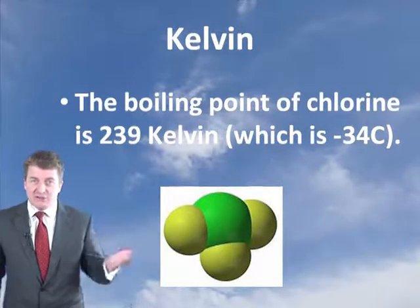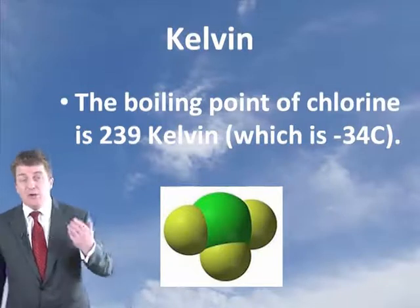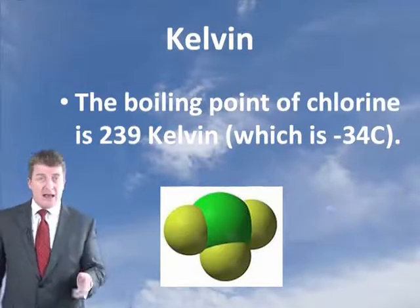As you heat something up it changes form — it depends on whether it has a high or low melting point. If you heated all three substances to zero degrees C, the water would turn from ice to liquid form — it will start to turn back to a liquid — but the steel would still be a solid.